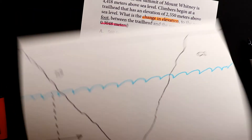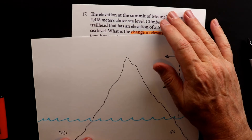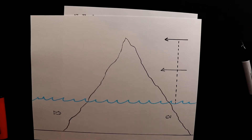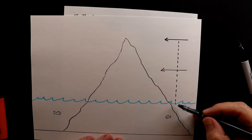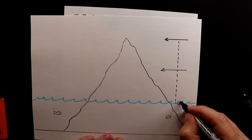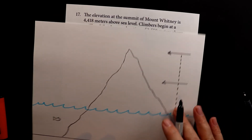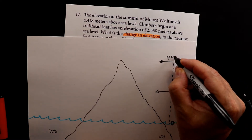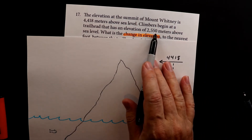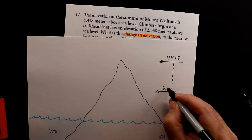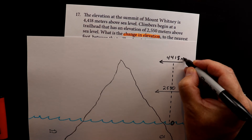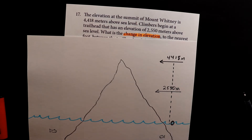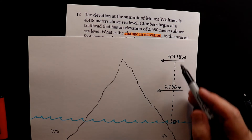To visualize this, I drew Mount Whitney. I put fish in there to show you that this is water. When they talk about sea level, they're talking about from 0 — so 0 is at sea level. The top of Mount Whitney is 4,418 meters, and the trailhead is at 2,550 meters. Remember, this is not feet — this is meters. A meter is approximately 3 feet.